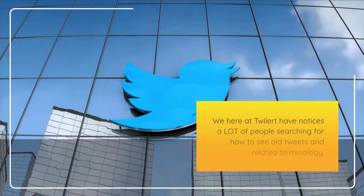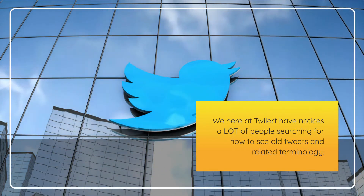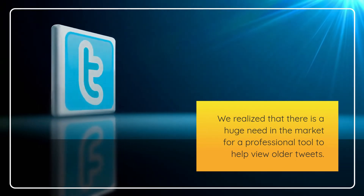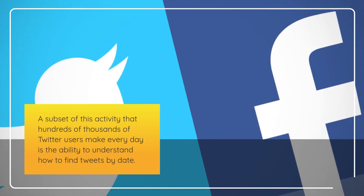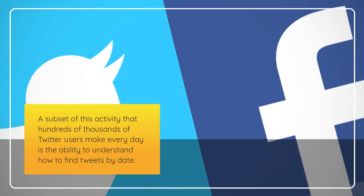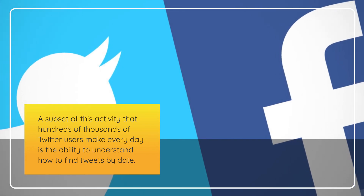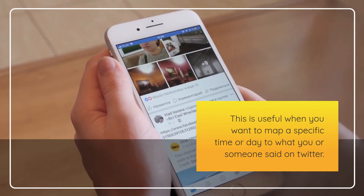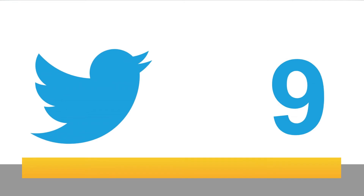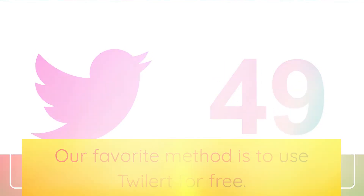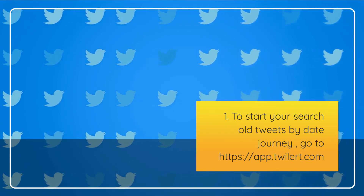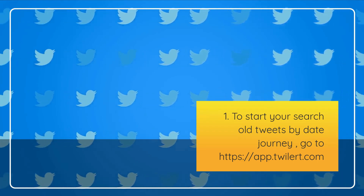We here at Twilert have noticed a lot of people searching for how to see old tweets. We realize there is a huge need in the market for a professional tool to help view older tweets. A common related activity is finding tweets by a specific date — useful when you want to map a date to what you or someone said on Twitter. Our favorite method is to use Twilert for free. To start your search of old tweets by date, go to https://app.twilert.com.